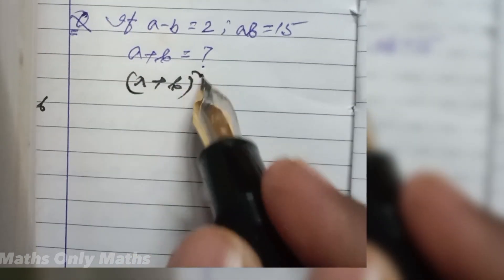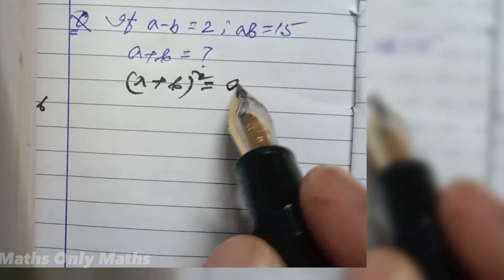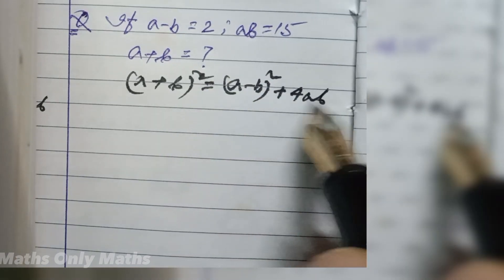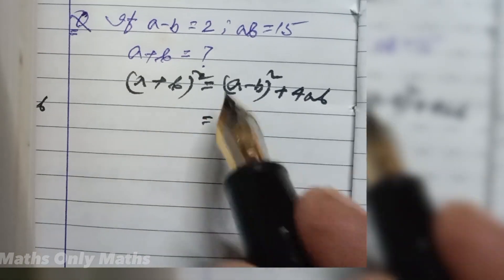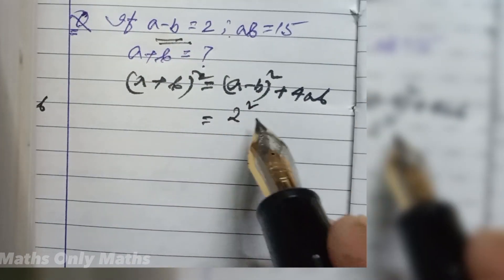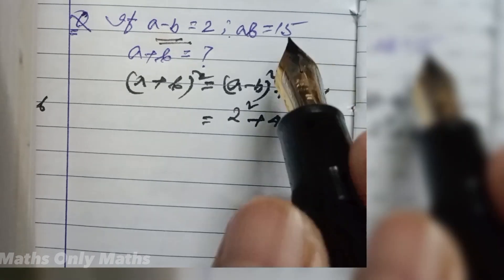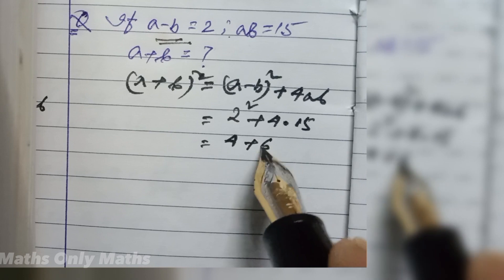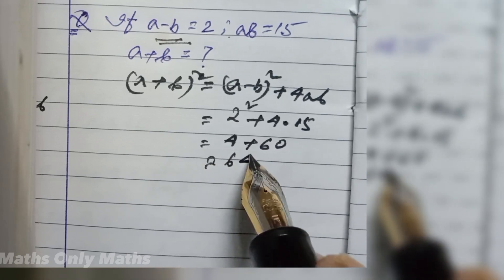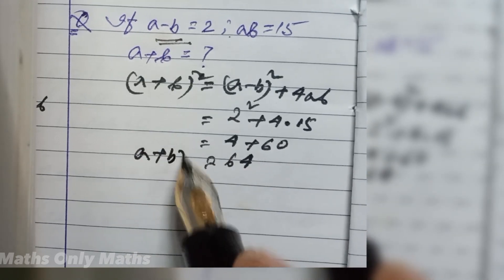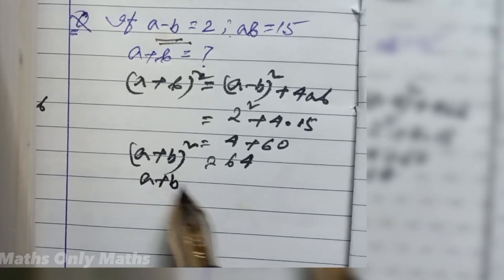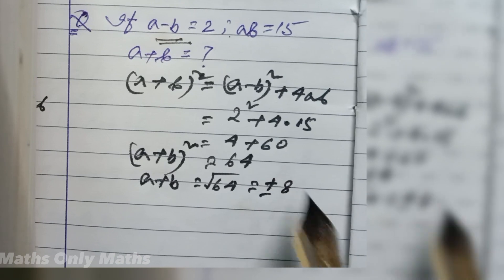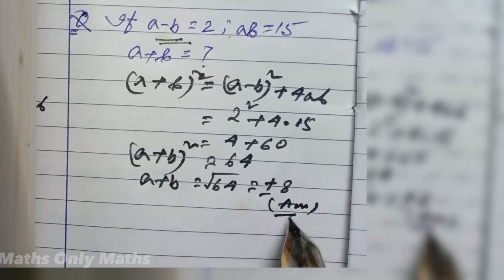a plus b whole square equals a minus b whole square plus 4ab. Now a minus b is 2, so I write 2 square plus 4 multiplied by ab, which is 15. That gives 4 plus 60, which is 64. So a plus b whole square is 64, and a plus b equals square root of 64, which is plus or minus 8. That is the answer.